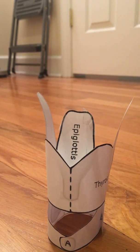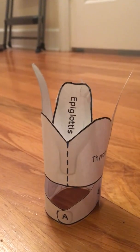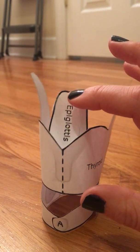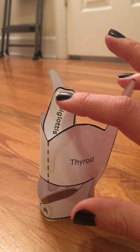It hangs over the laryngeal opening, and its function is to protect the airway from food particles that might fall in.